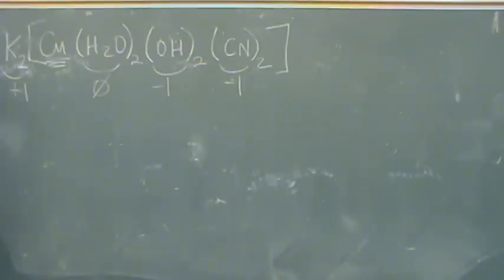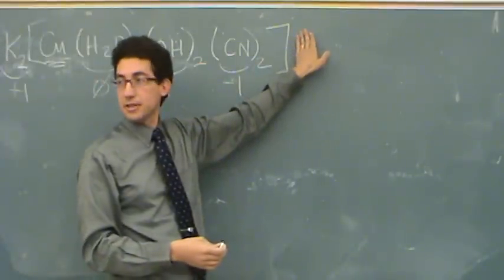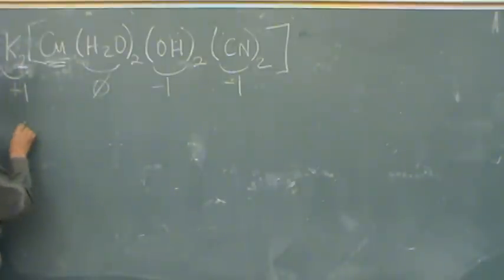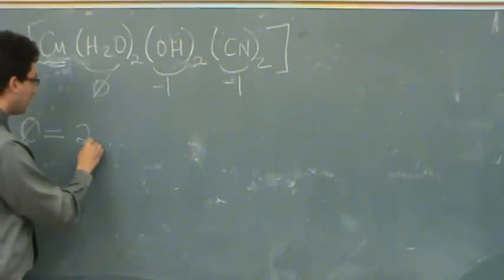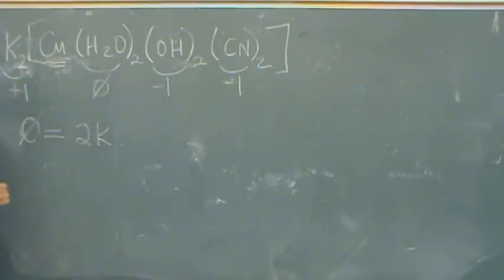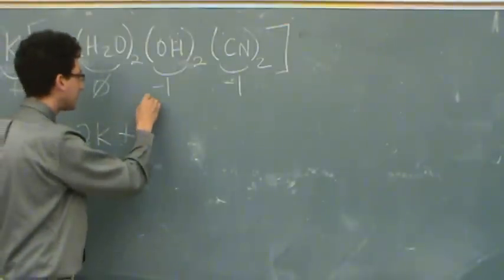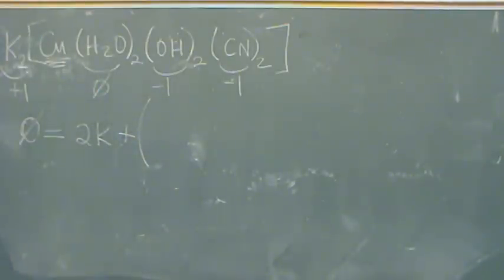Okay, now let's set up a little bit of an equation. The overall charge is zero, because nothing's written. Zero for the overall charge equals, there's going to be two K's plus everything that's in brackets. I'll put a big parentheses for the brackets.